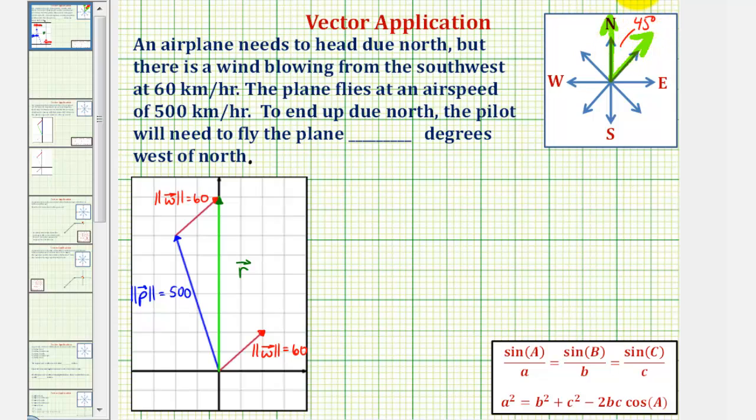Which means this angle here in the triangle is 45 degrees, and now our goal here is to determine the number of degrees the plane must fly west of north, which would be this small acute angle here in this triangle, which we'll call angle alpha. Again, angle alpha is this angle here, which would be the number of degrees the plane must fly west of due north.